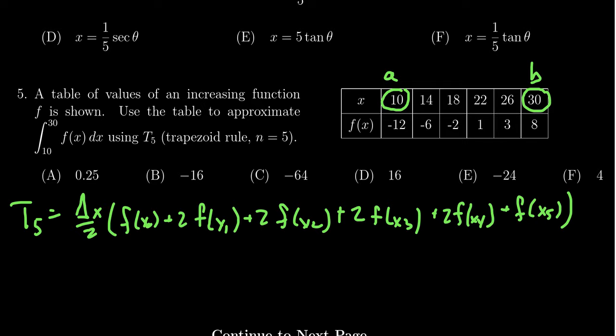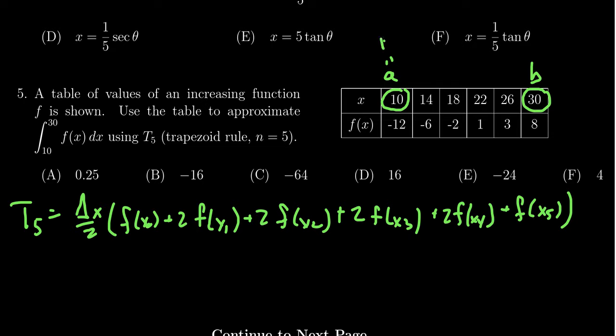Some things to note here is that the a value, this is exactly what we mean by x0. So we already know that this one right here is x0 and b is going to be our x5 right here.